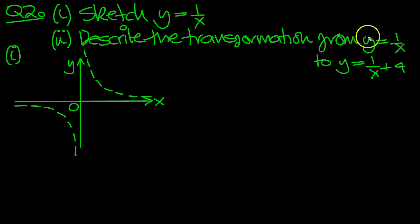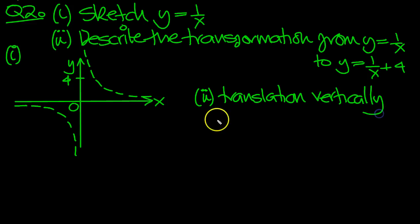So describe the transformation then from this curve to y equals 1 over x plus 4. Well it's going to shift everything up by 4 units vertically isn't it? So part 2. So it's a translation vertically upwards, a distance of 4 units.